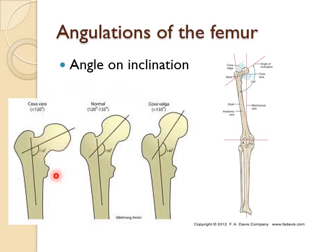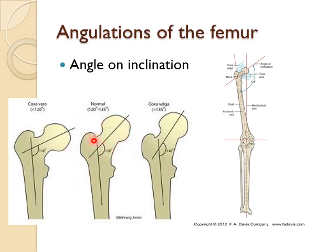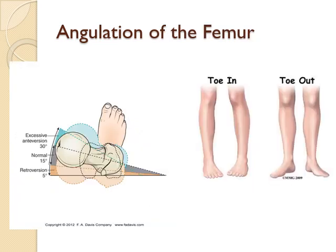Coxa vara is a decreased angle of inclination, less than 125 degrees, which can occur later in life due to arthritic changes. This predisposes the femur to fractures, particularly at the femoral neck, because the angle becomes almost parallel with the ground, changing how forces are transmitted. The optimal angle provides leverage and appropriate force distribution.